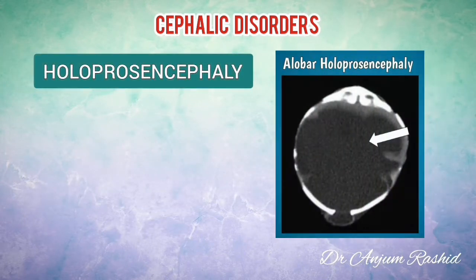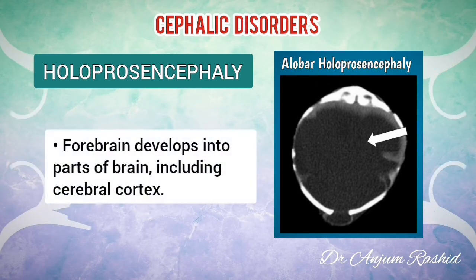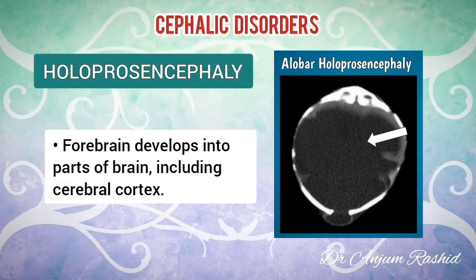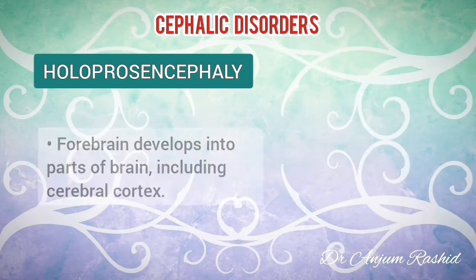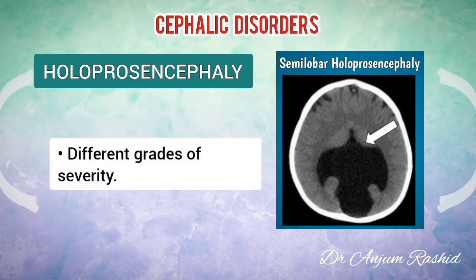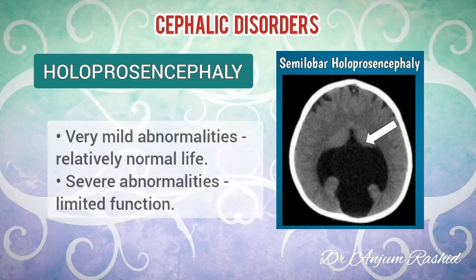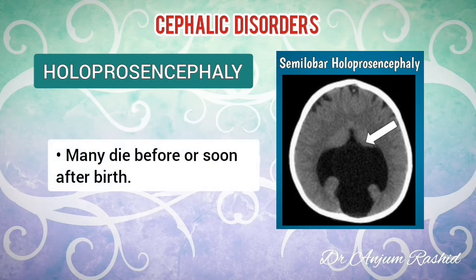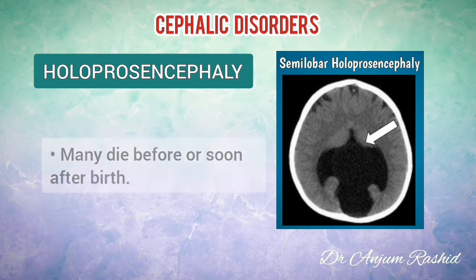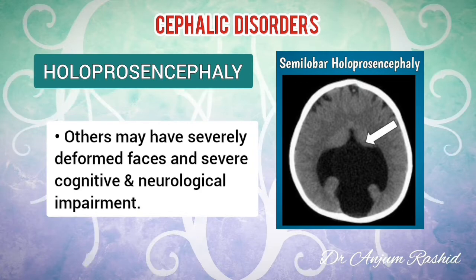Next is holoprosencephaly. It is the failure of the prosencephalon, or forebrain, to develop normally. The forebrain is a region of the brain in the fetus that develops into part of the adult brain, including the cerebral cortex. Instead of the normal complete separation of the left and right halves of the forebrain, there is an abnormal continuity between the two sides. There are different grades of severity. A baby may have very mild abnormalities and lead a relatively normal life, or there may be severe abnormalities and limited function. Many babies with the severe form die before or soon after birth. Others may live but have severely deformed faces and severe cognitive and neurological impairment.